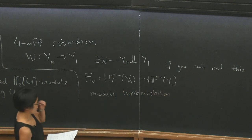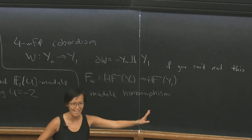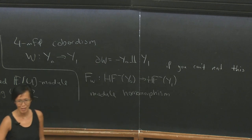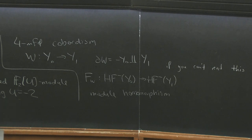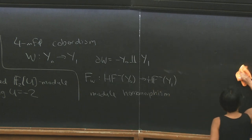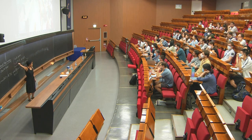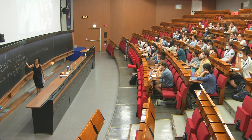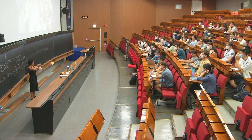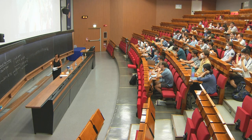If I wanted to be careful, I should say something about spin-c structures on the cobordism and three-manifolds, but for this first pass I'll ignore some of those details for the sake of cleaner statements. This behaves nicely: if W is a product cobordism it induces the identity map, and if you stack two cobordisms together the composition of the maps equals the map induced by the composite cobordism.